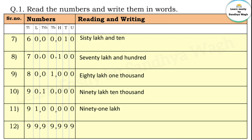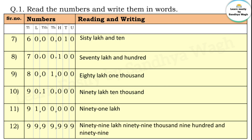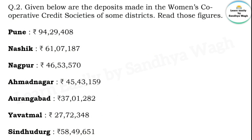Next number is 99 lakh. Now question number two: given below are the deposits made in the women's cooperative credit societies of some districts — read those figures. Pune: 94 lakh 29 thousand four hundred and eight. Nashik: 61 lakh 7 thousand one hundred and eighty-seven. Nagpur: 46 lakh 53 thousand five hundred and seventy. Ahmadnagar: 45 lakh 43 thousand one hundred and fifty-nine.